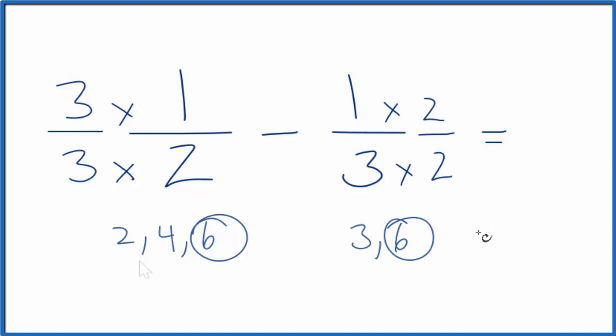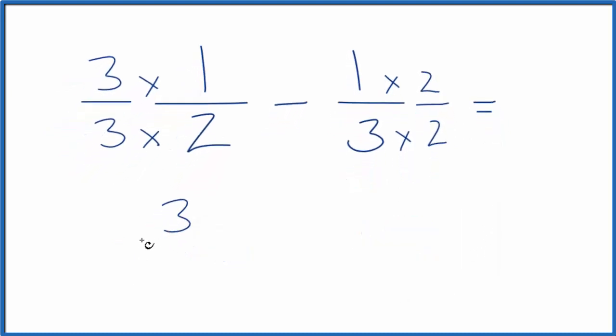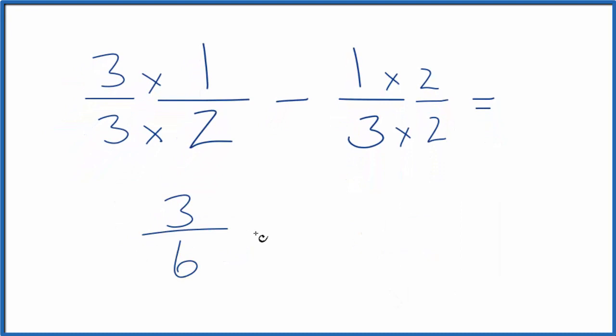Now we have three times one is three, over three times two, that's six. Minus one times two, that's two, over three times two is six.